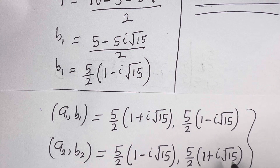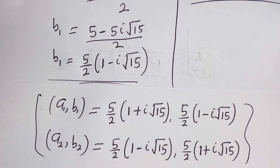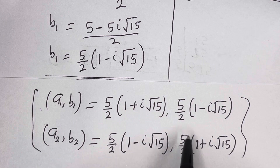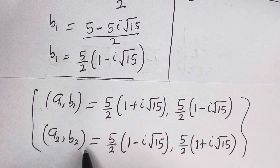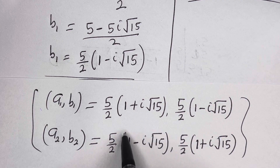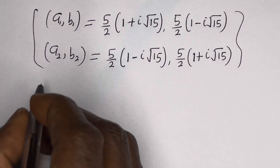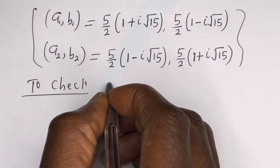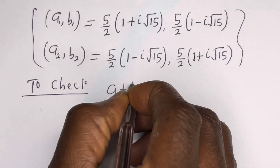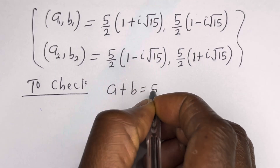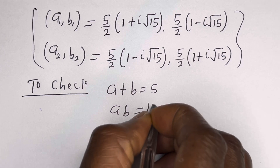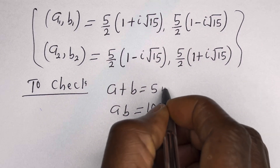These are the final answers. You can see that the value of A1 equals the value of B2, and the value of B1 equals the value of A2. We may check to confirm if this answer is right. Let's check using the given equations: A plus B equals 5, and AB equals 100.